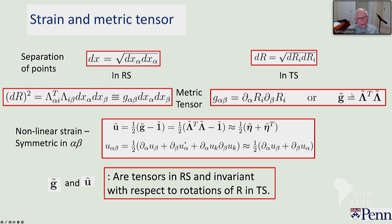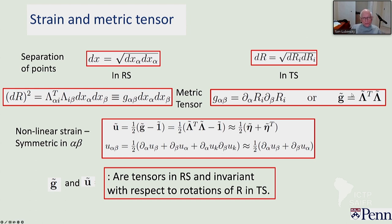The Lagrangian strain tensor is U equals half times (G minus one). So G equals one plus 2U, and you can expand G as Lambda^T Lambda. When you subtract the one, U in the linearized limit is one-half (A tilde plus A tilde transpose), which is D_alpha U_beta plus D_beta U_alpha over two. U_alpha_beta with that construction has what we often think of as the strain. The real strain tensor is necessarily non-linear — there is an extra part D_alpha U_k D_beta U_k that guarantees rotational invariance of the system. G and U are tensors in the reference space and are invariant with respect to rotations in the target space.